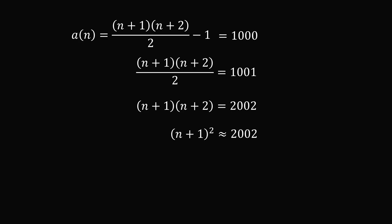This means we have approximately (n+1)² = 2002. We take the square root of both sides, so n+1 is approximately equal to 44.7. So let's test out some values around this.